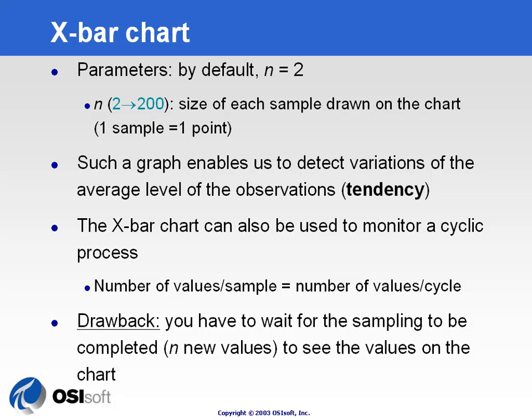Essentially, this chart is going to enable the user to detect variation on the average level. If you want to look for tendency — upward or downward movement in the process — you would use an X-bar chart. It wouldn't tell you much about the spread and variability of the process, because you're looking at the evolution of the average over a period of time.